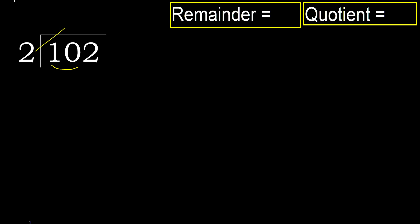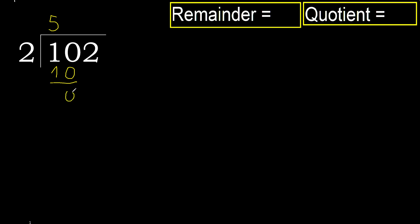2 multiplied by which number is nearest to 10, but not greater? 2 multiplied by 6 is 12 — 12 is greater. Multiply by 5 is 10, it is not greater. Subtract 0.